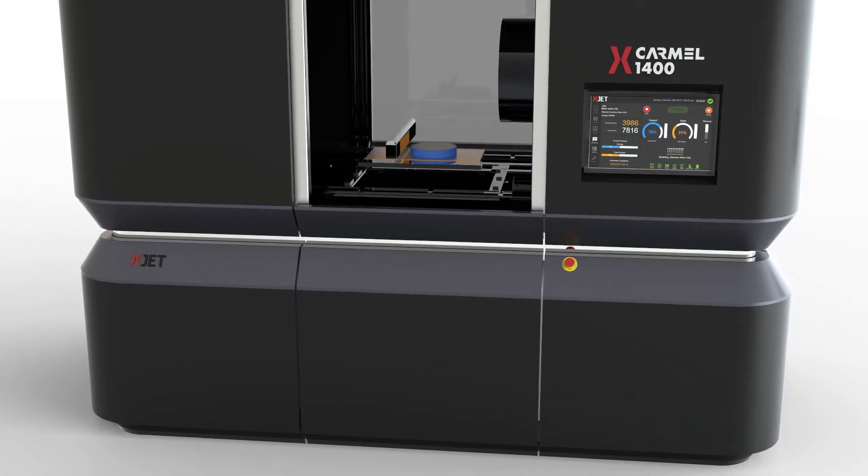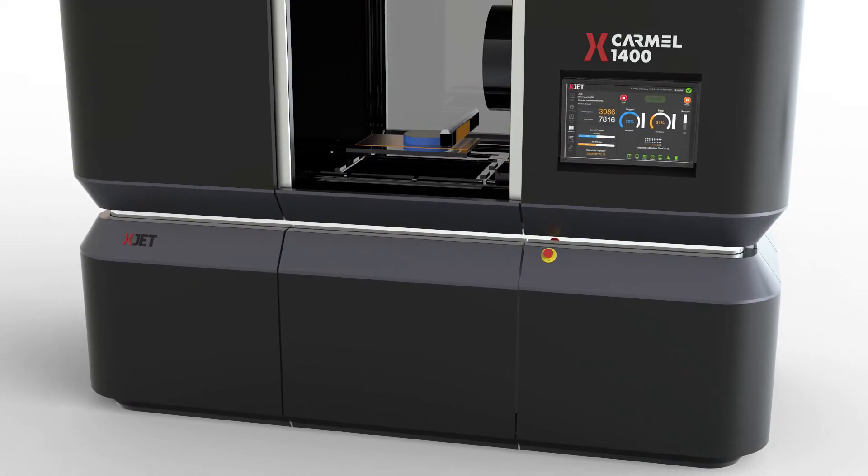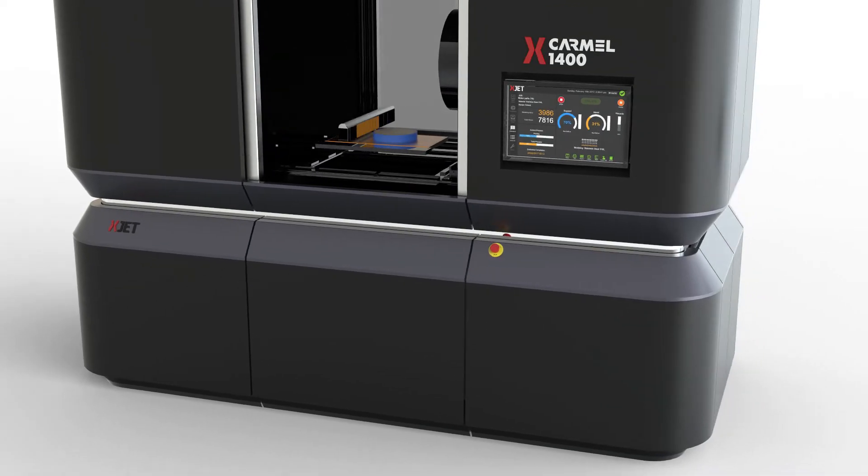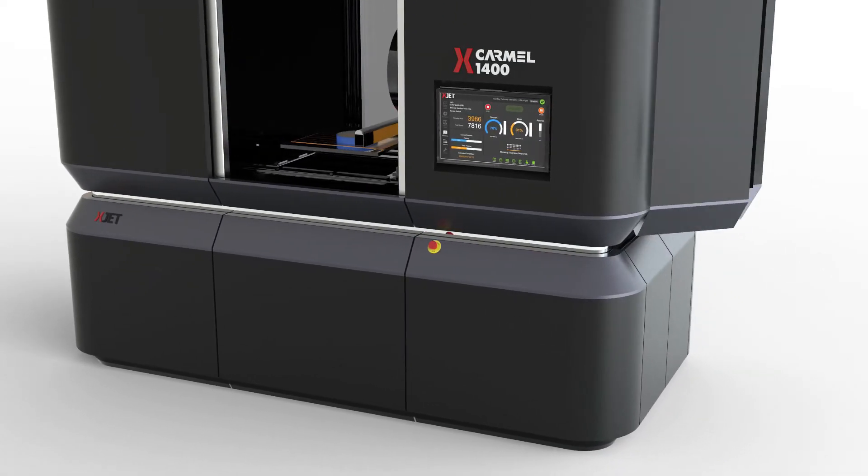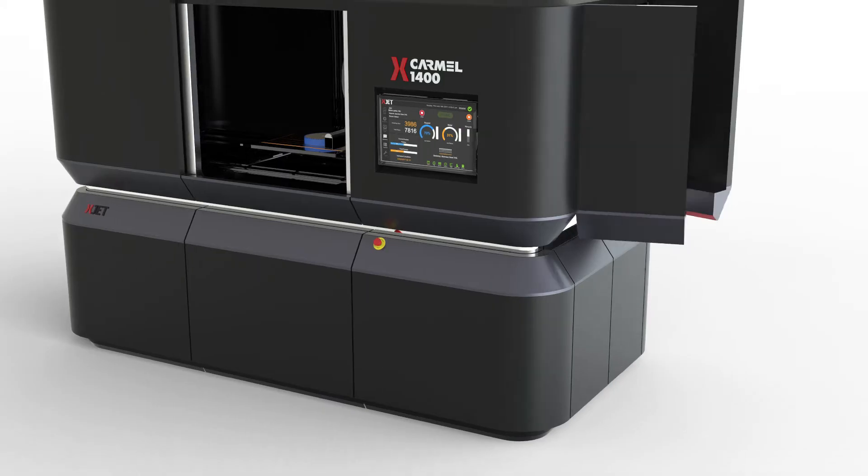So, how does it work? Ceramic materials, packaged within convenient cartridges, are easily and safely loaded by hand into the X-Jet Carmel AM system.